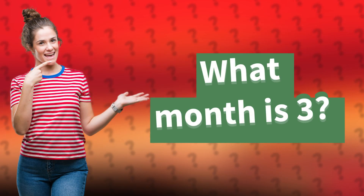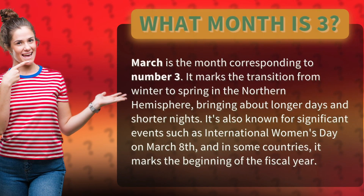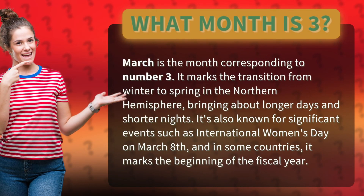What month is 3? March is the month corresponding to number 3. It marks the transition from winter to spring in the Northern Hemisphere, bringing about longer days and shorter nights.